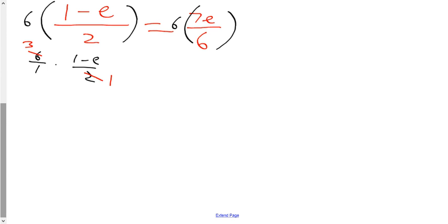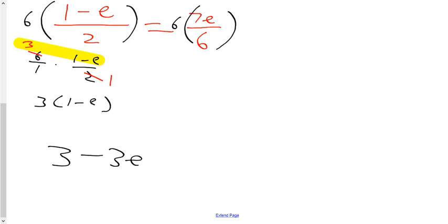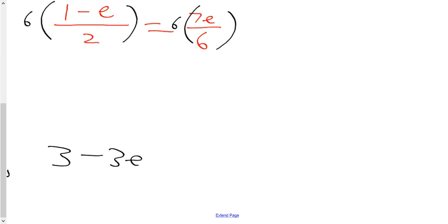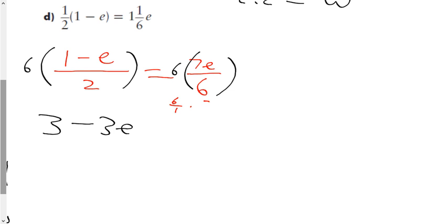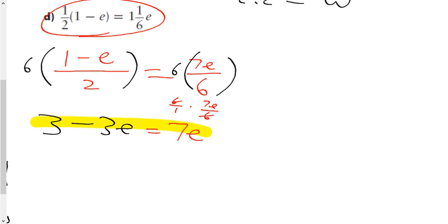The better approach is to cross-reduce: 6 over 2 reduces to 3 over 1, so the denominators disappear and I just multiply numerators. Multiplying 3 by (1 minus e) — don't forget to use distributive property when multiplying a monomial by a binomial — gives 3 minus 3e. On the right side, 6 multiplied by 7e over 6 cross-reduces to simply 7e.